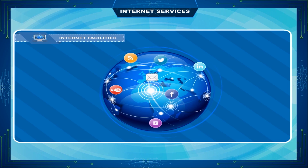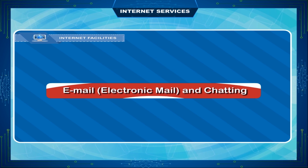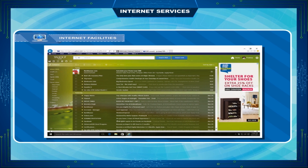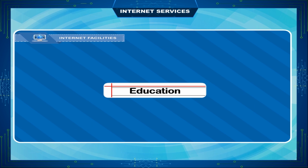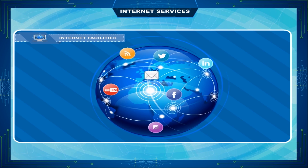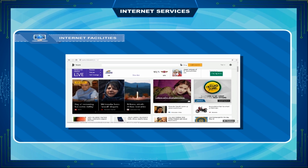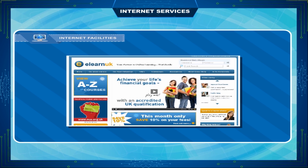The internet has made the world a small place. It provides us several facilities. Email, electronic mail, and chatting — these facilities make it possible to send and receive messages from any part of the world within seconds. With the help of the internet, it is easy to get information on any topic from different sources or websites.